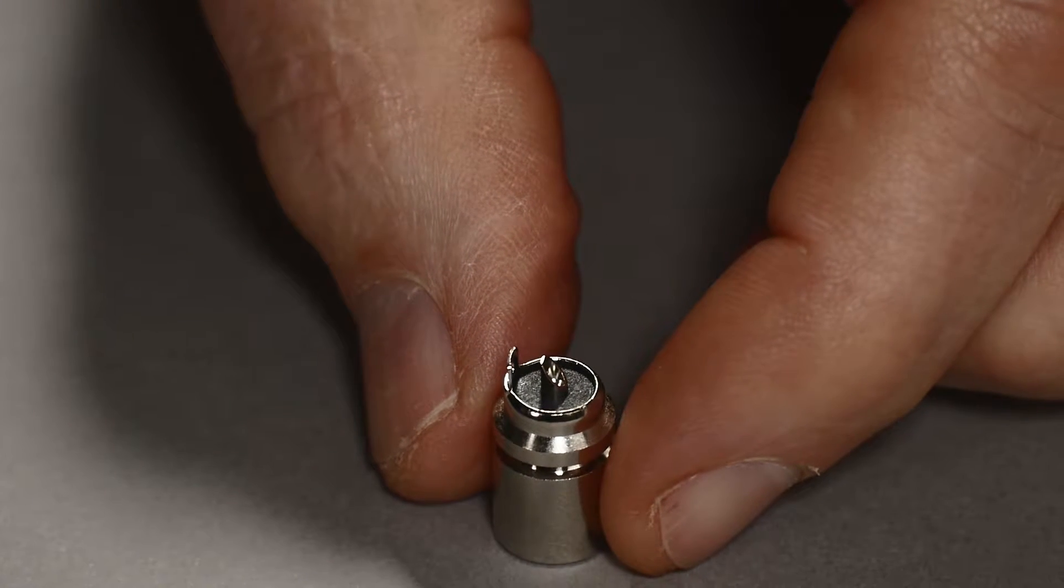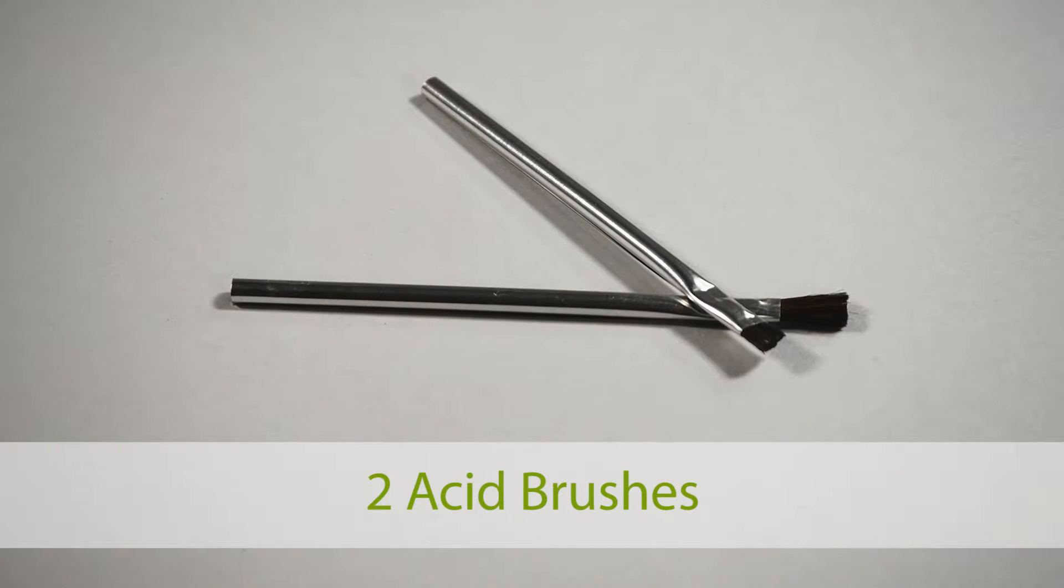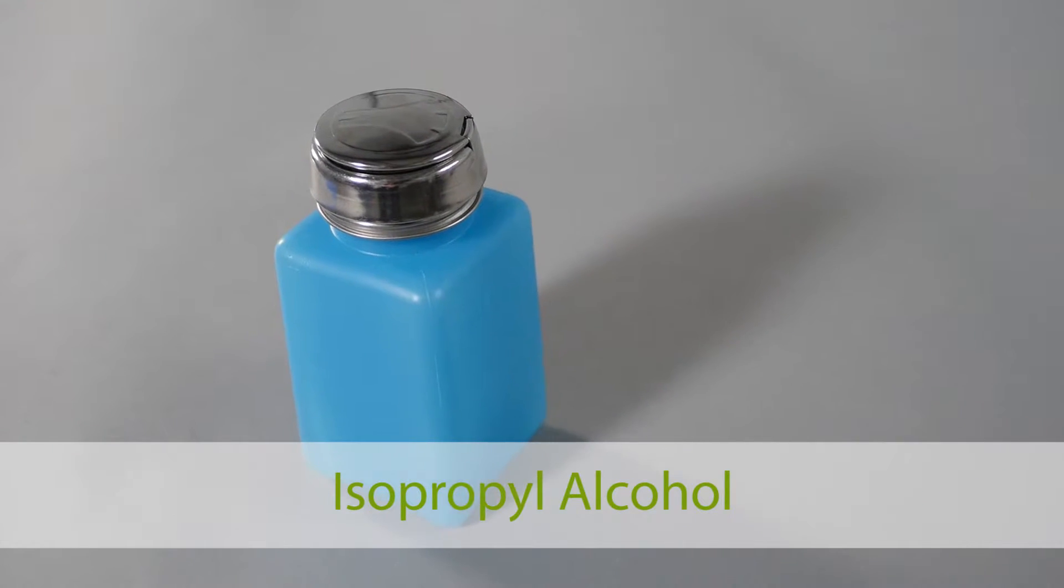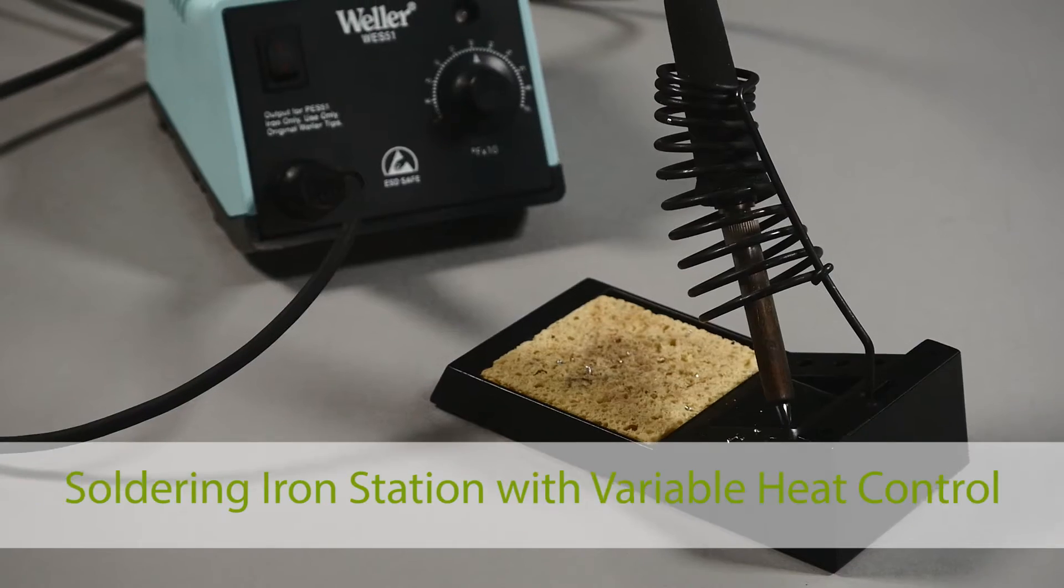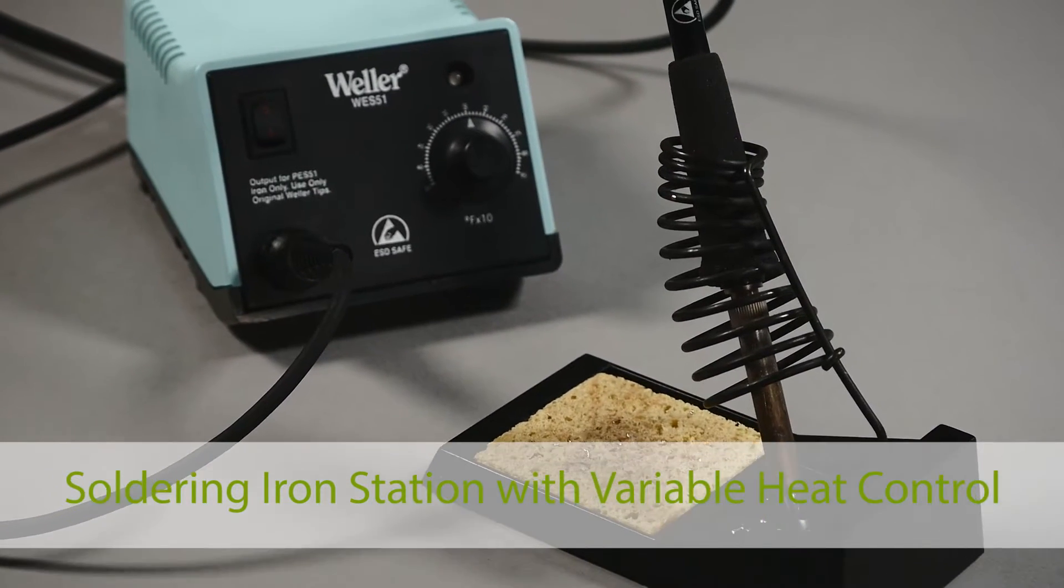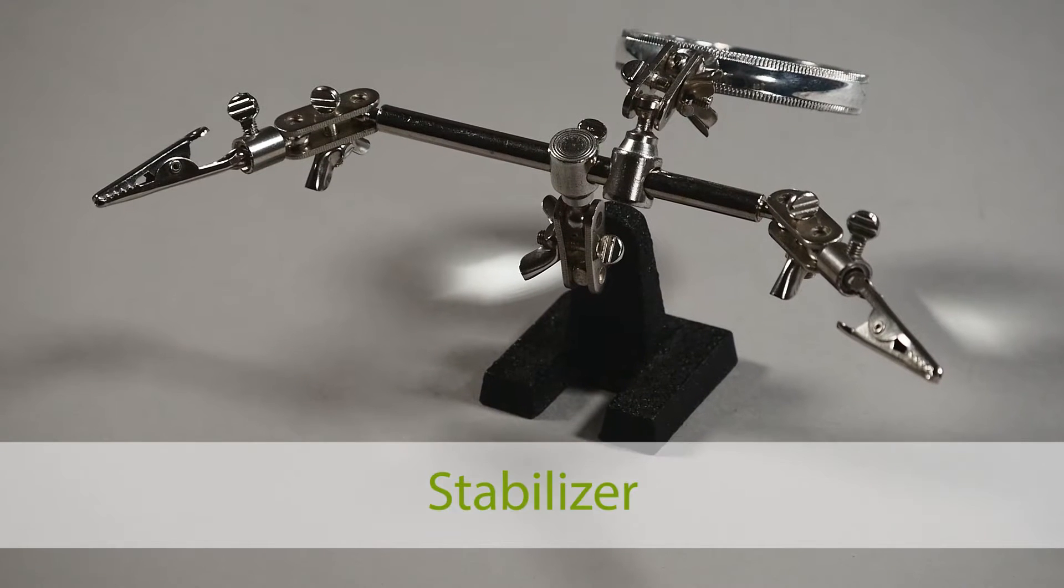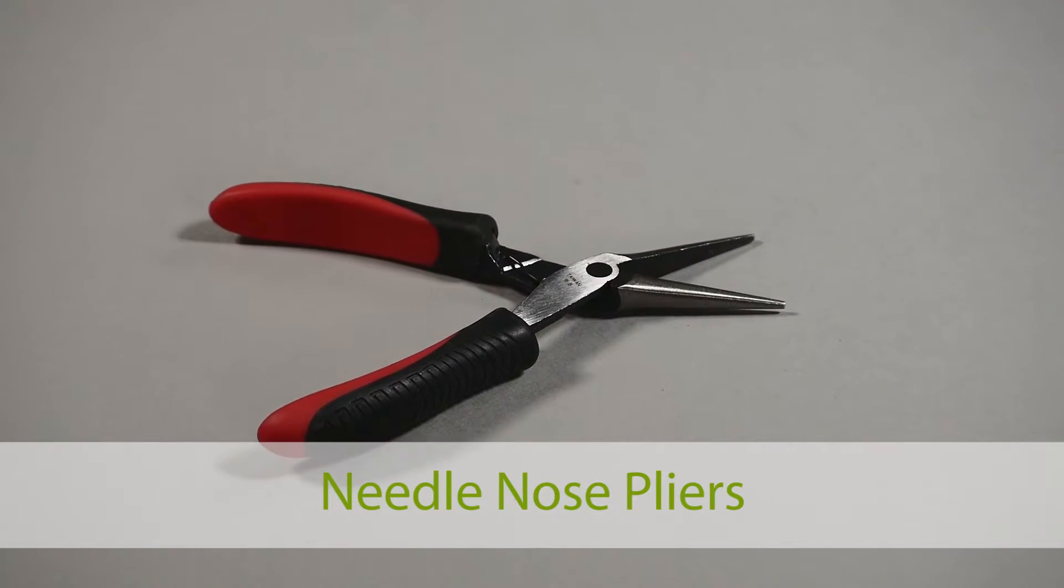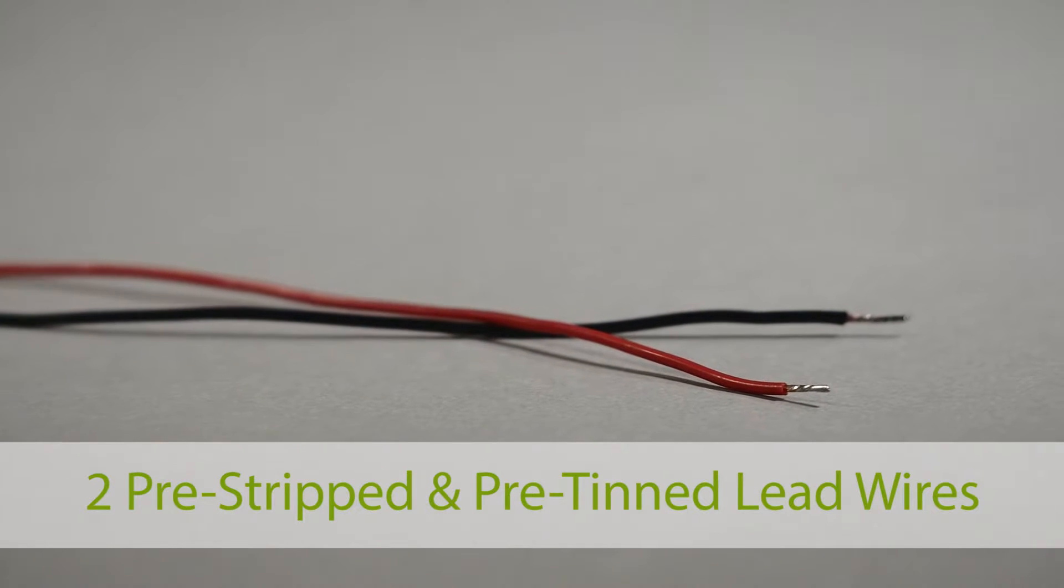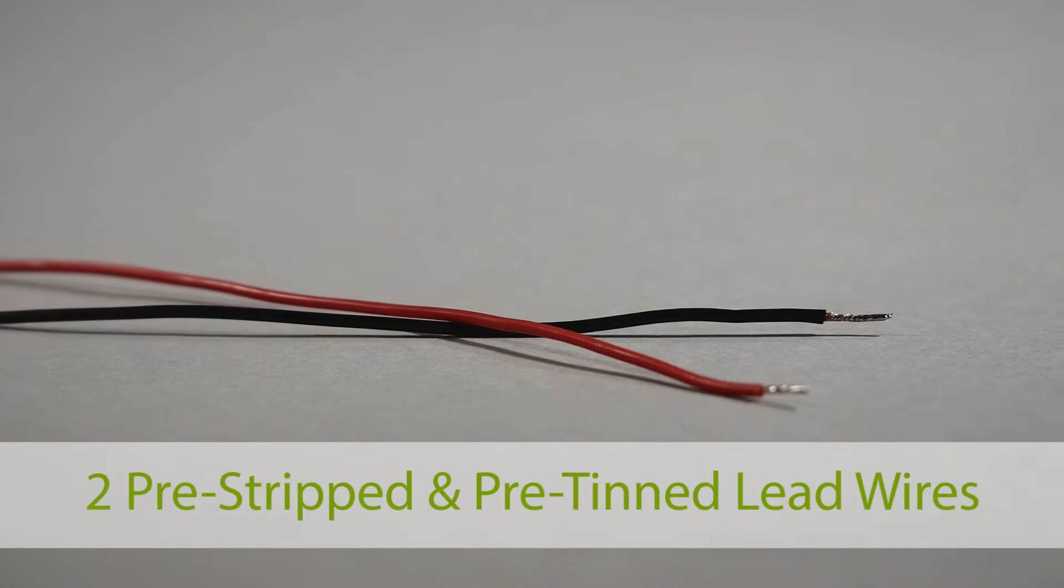For this video you will need two acid brushes, isopropyl alcohol, solder paste, solder, a soldering iron station with variable heat control, something to stabilize the connector, solder wick, needle nose pliers, and two pre-stripped and tinned wires suitable for your application.